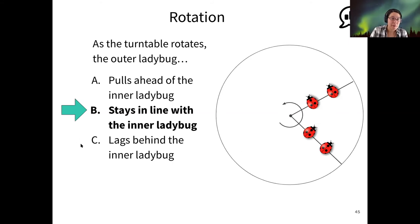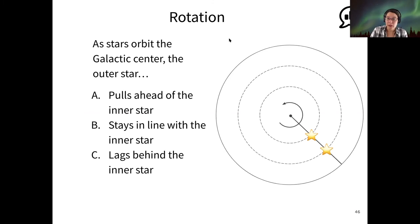But maybe because you did the reading, you already know what happens for stars. So let's say that instead of ladybugs on a record player, now this is my spiral galaxy, the Milky Way, and I have an inner star and an outer star. Now how do they relate to each other as the galaxy rotates?